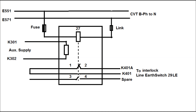The CBT B phase to neutral has been shown by E551 and E571, and is also fed to the coil of the under voltage relay by means of fuses and links. Two contacts — one NC (contacts 1 and 2) and one NO (contacts 3 and 4) — have been shown in this figure. Auxiliary supplies are also given to the under voltage relay by means of K301 and K302.